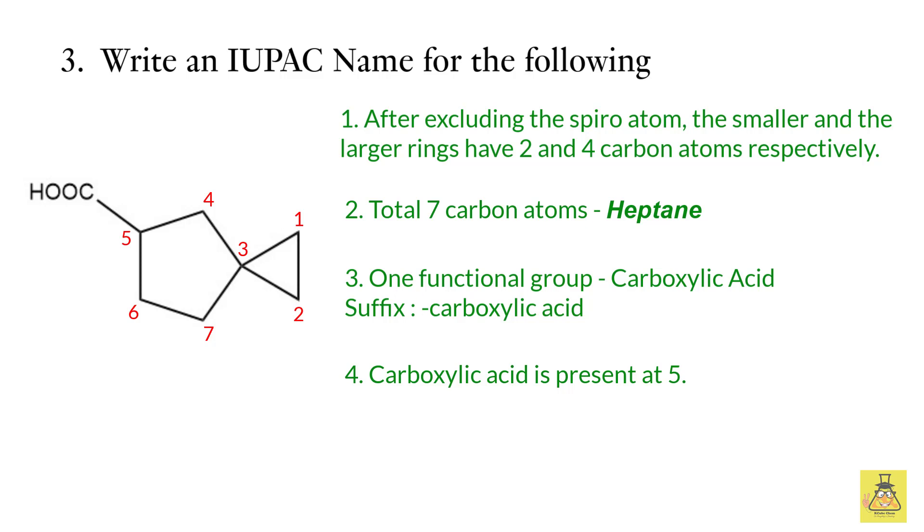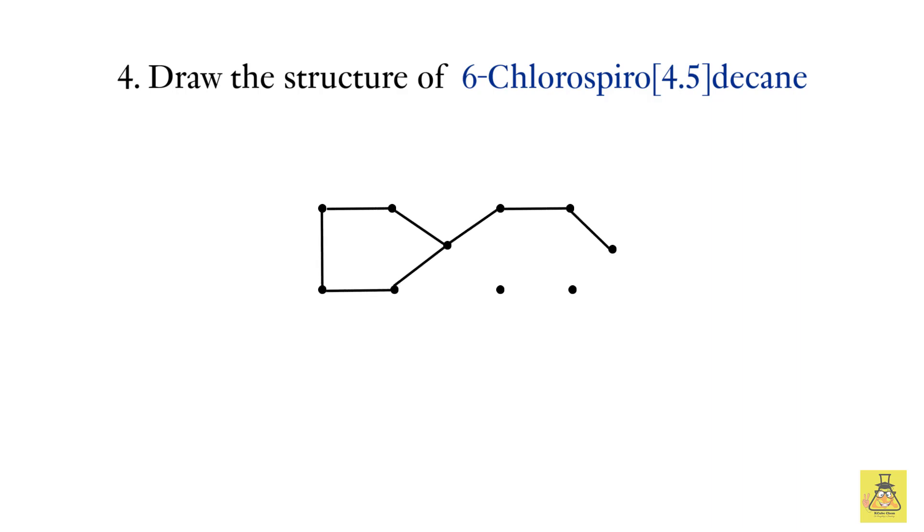Now let us twist this a little bit and try to draw a structure from the name. Let's say we have to draw the structure for 6-chlorospiro[4.5]decane. The way I ask my students to do this is by drawing the spiro atom first. Since we have 4 and 5 inside the bracket, we draw 4 and 5 dots on either side of the spiro atom. Then we will join all the atoms to give us the parent. Let's start numbering this, starting from the smaller ring then to the larger ring, and finally at position 6 we put a chloro substituent. Ta-da, there we are!